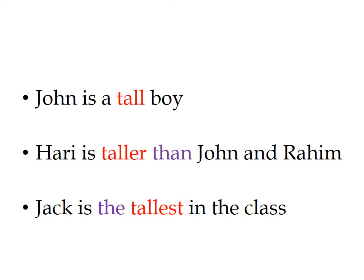Now we compare John with someone else. We have two friends: Harry and Raheem. We say 'Harry is taller than John and Raheem.' Of the three boys, Harry is the tallest. 'Harry is the tallest among Harry, John, and Raheem.' Please note that after the comparative degree of an adjective, we use the word 'than' (t-h-a-n).